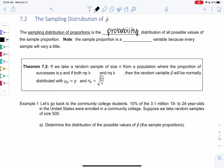Probability distribution of all possible values of the sample proportion. And a reminder, the sample proportion is a random variable, p-hat, is a random variable because every sample will vary a little.